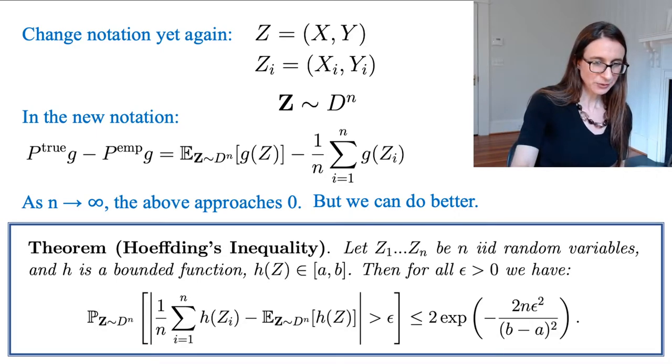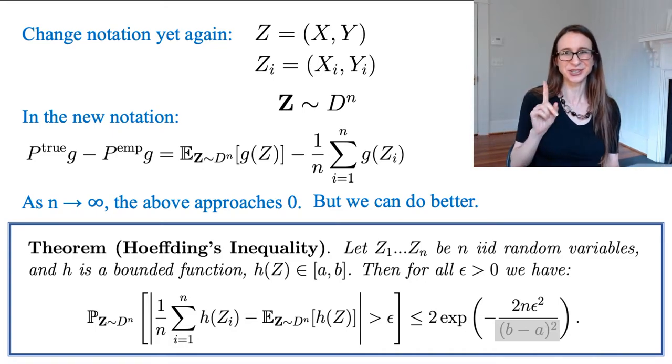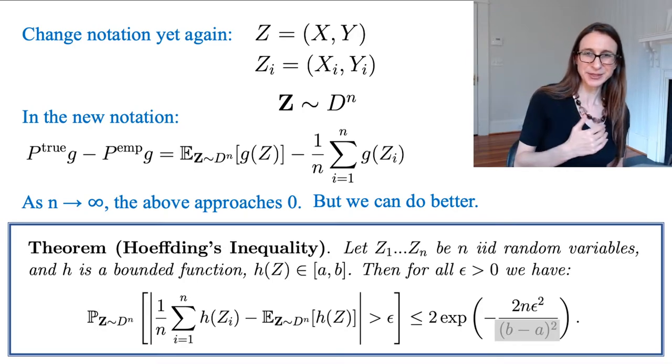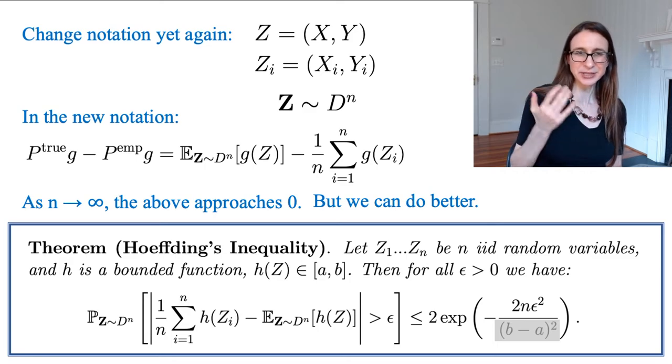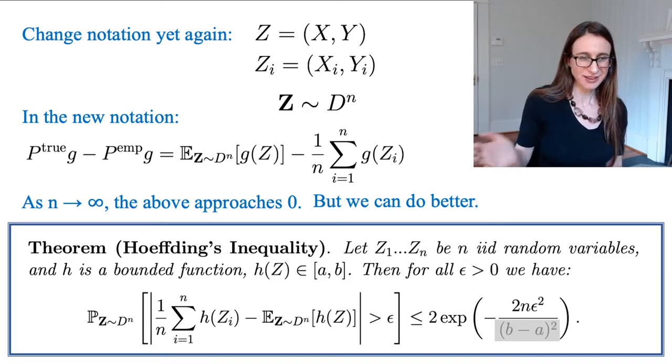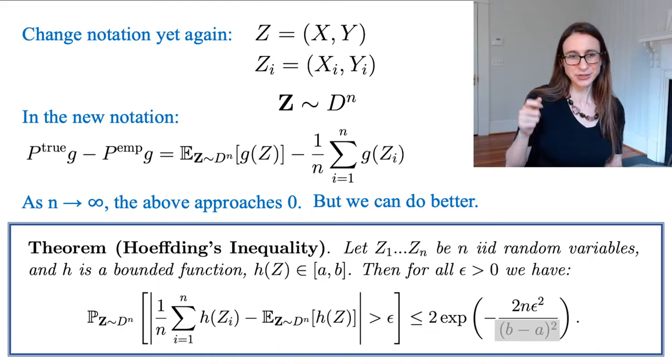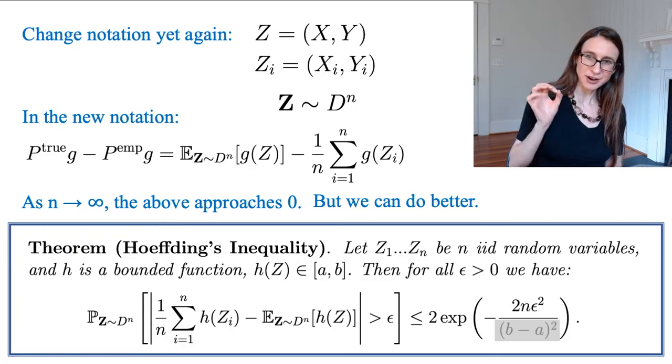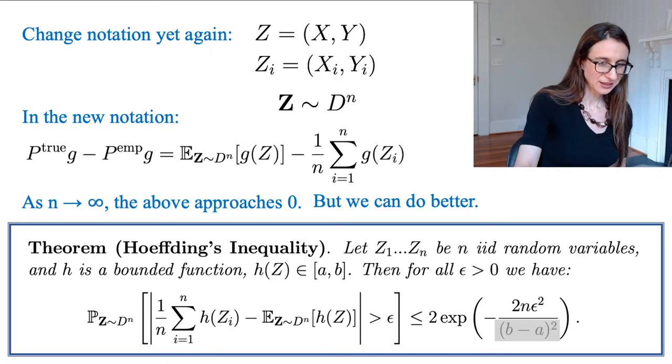So again, I want you to kind of not worry about this b minus a. That's not an important quantity here because again, it's just going to be one. So I want you to remember that the probability that something bad happens is small. And that small is 2e^(-2nε²). So the quantities here that are important are n and epsilon.